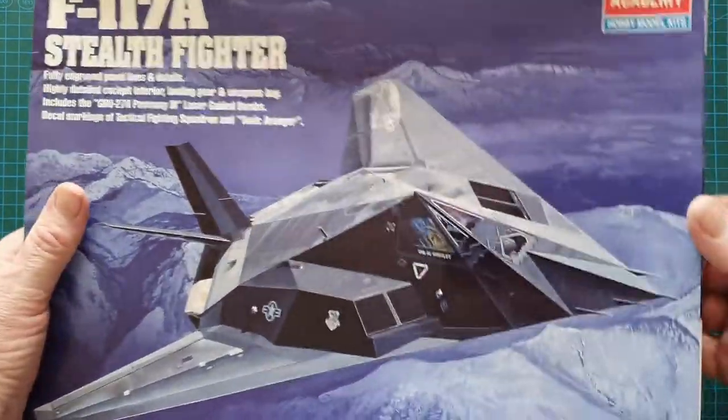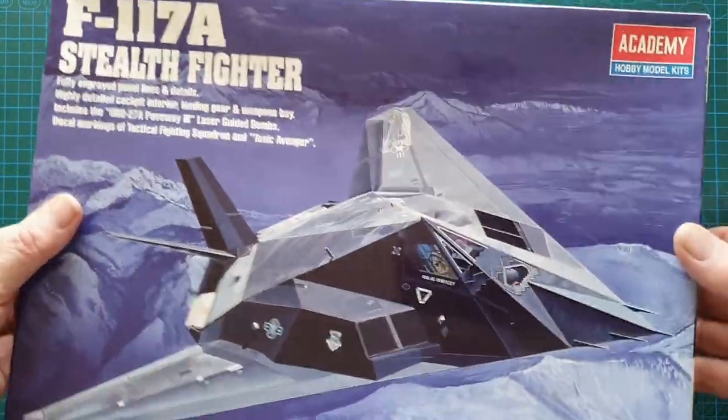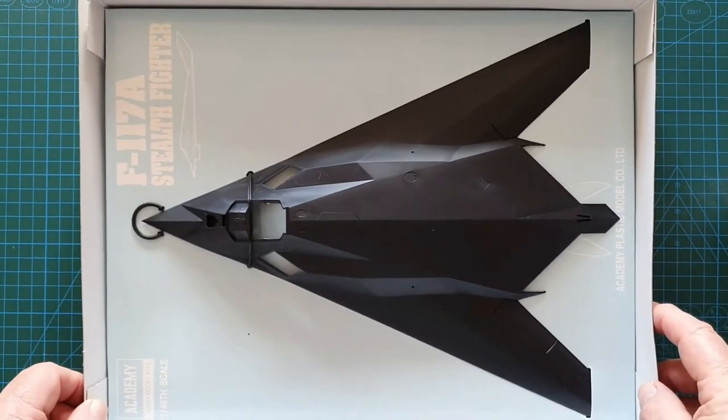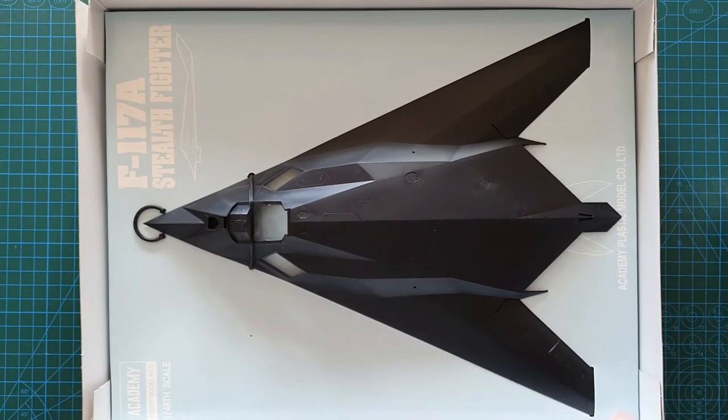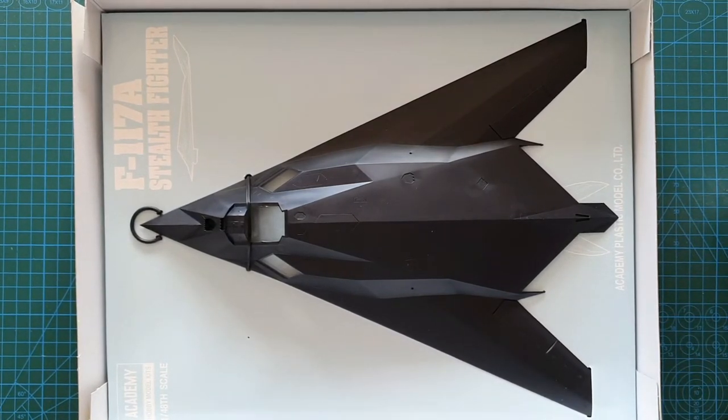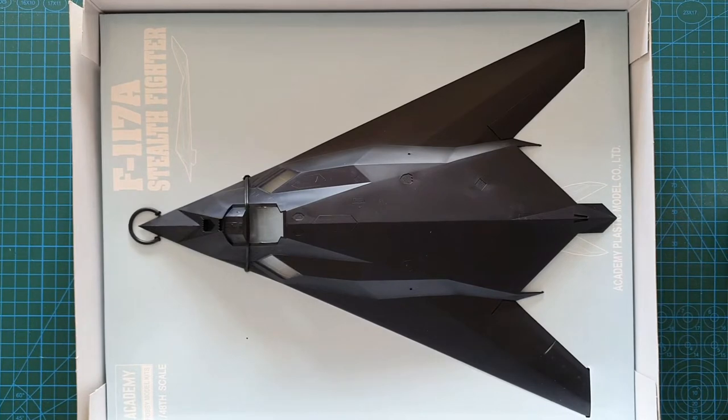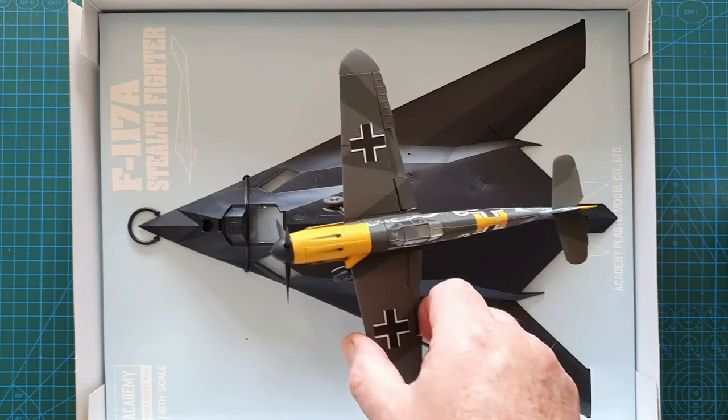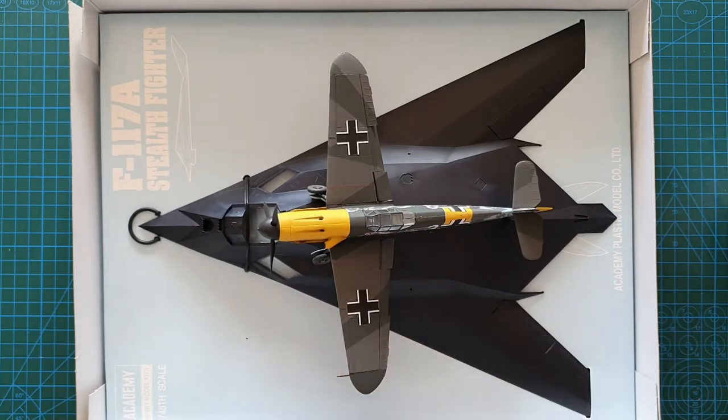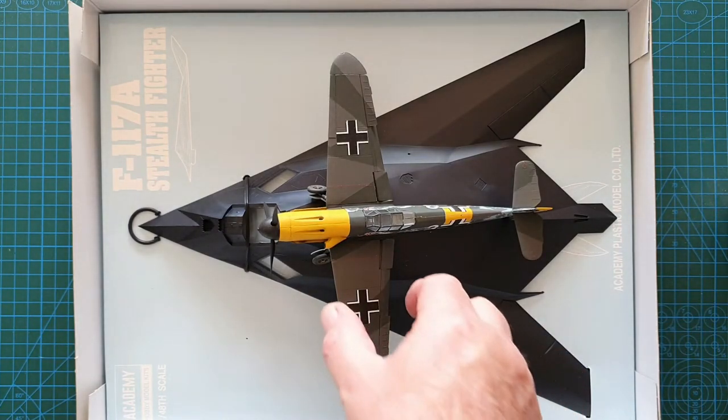So that's the box. What did I get for my $35? Here she is, there's your stealth fighter. Just to give you a comparison of how big this aircraft actually is in real life, here is a 1/48 scale Messerschmitt Bf 109. I didn't realize that these things were huge.